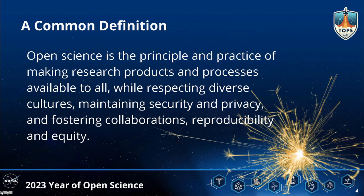We know that language matters. One of the first things the sub working group did was merge many existing open science definitions. These 10 federal agencies recognized that open science isn't a product — it's really a practice. Open science is the principle and practice of making research products and processes available to all, while respecting diverse cultures, maintaining security and privacy, and fostering collaborations, reproducibility, and equity. This is now the definition all 10 agencies will use.